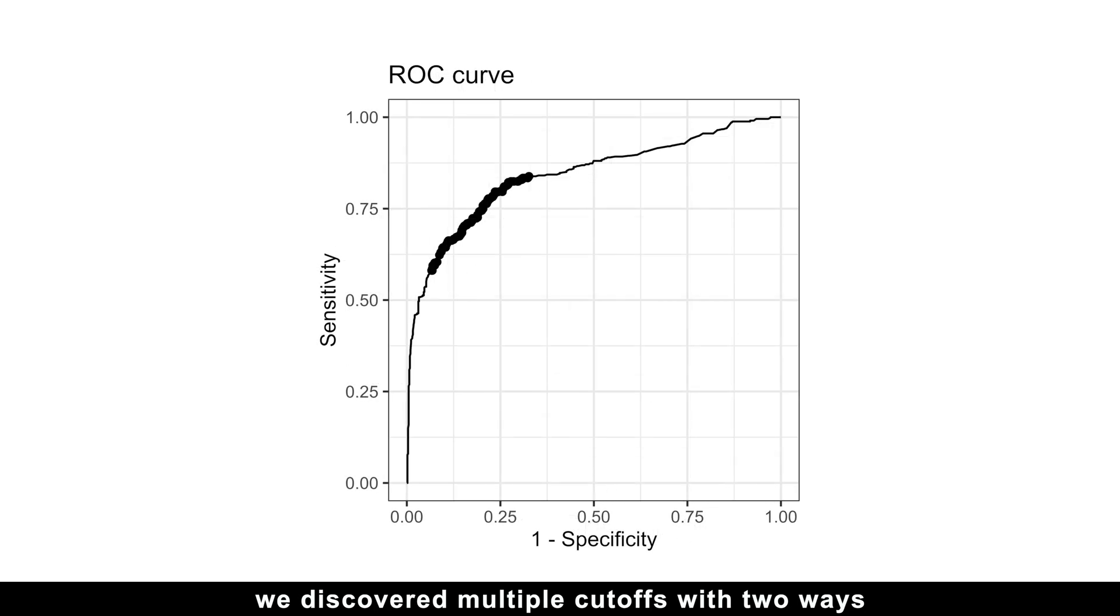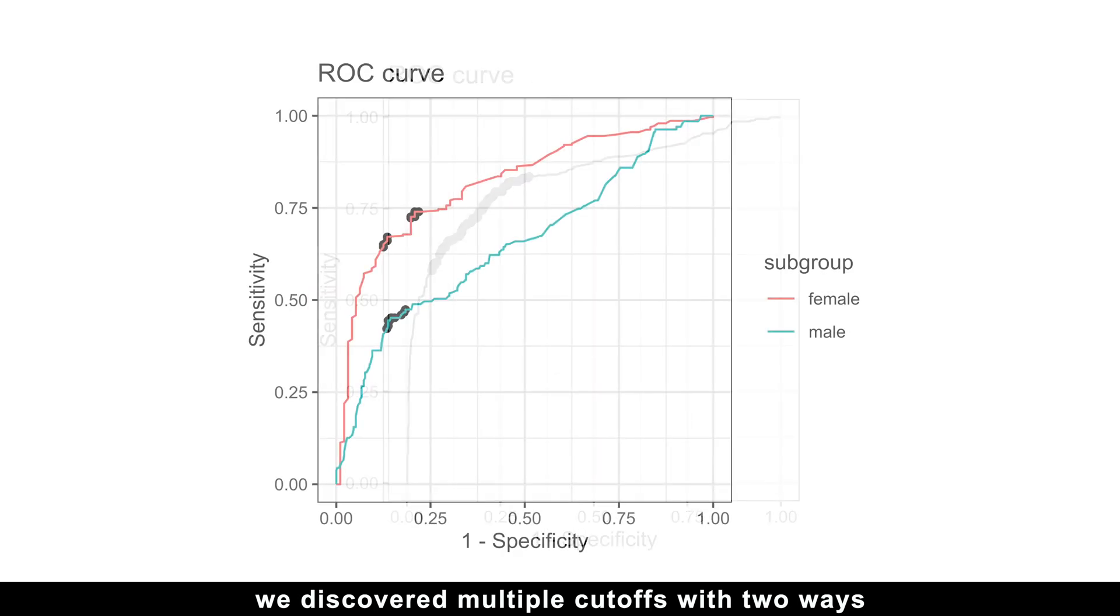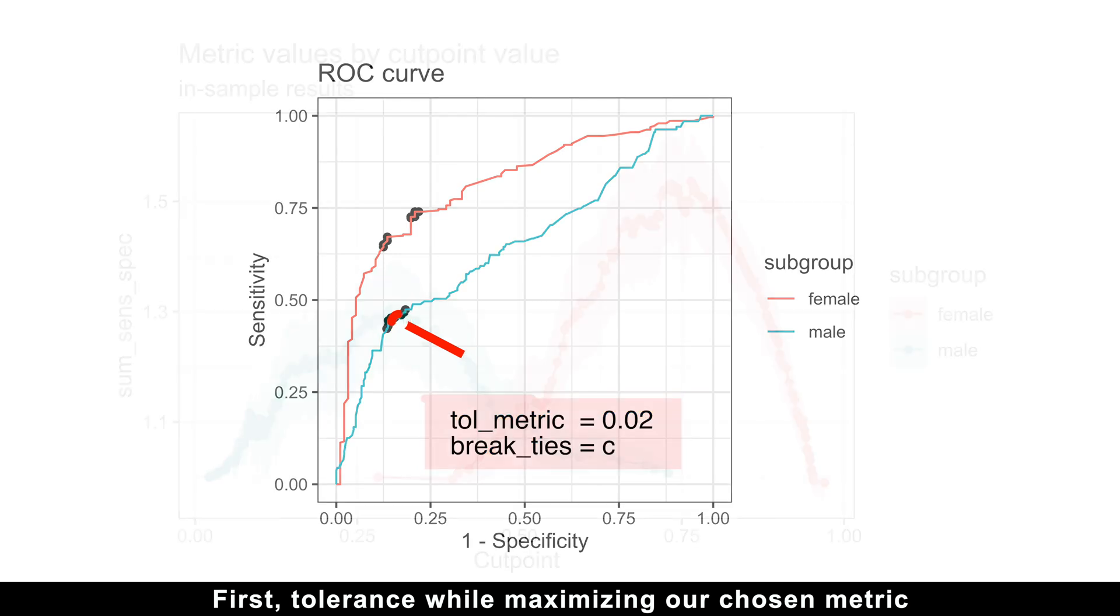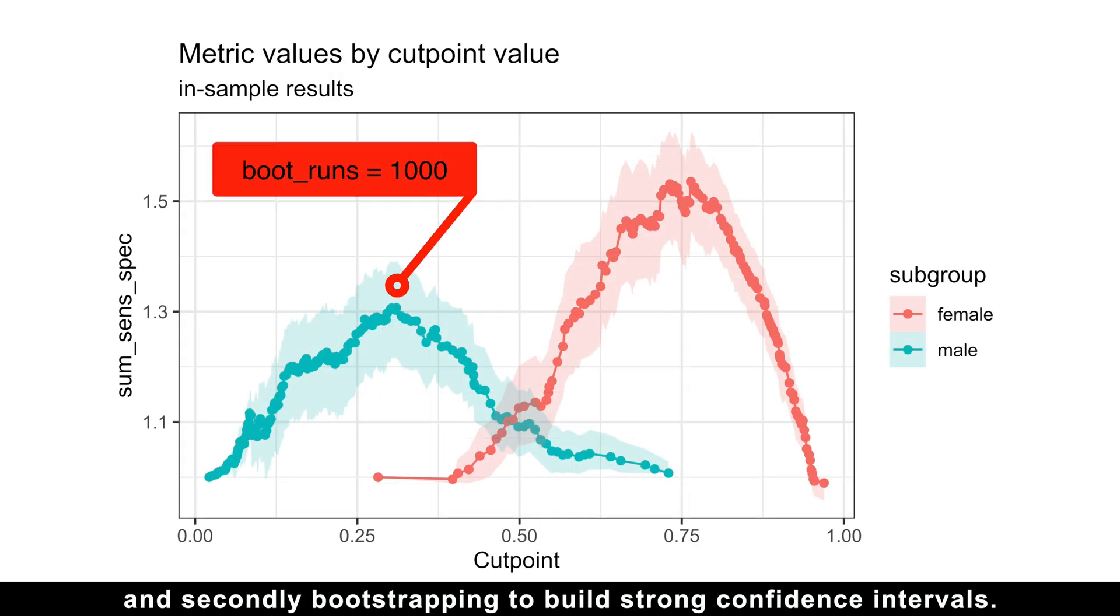I hope you can see that we didn't just find one cutoff. We discovered multiple cutoffs with two ways to measure uncertainty. First, tolerance while maximizing our chosen metric. And secondly, bootstrapping to build strong confidence intervals.